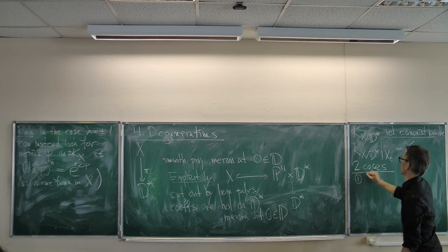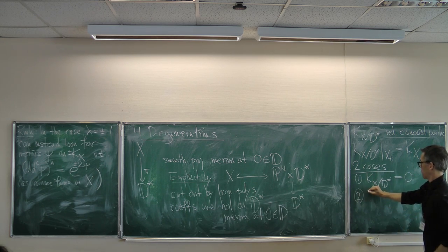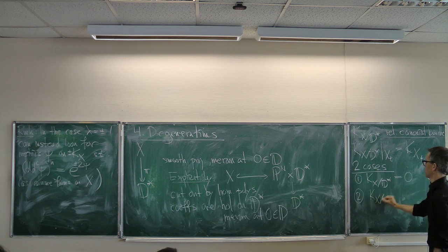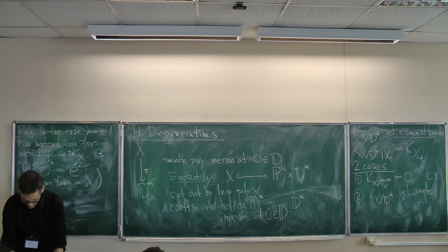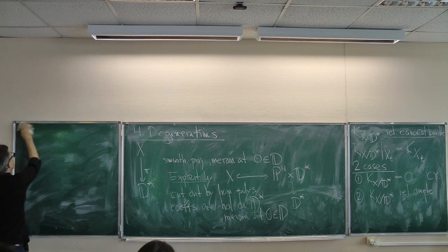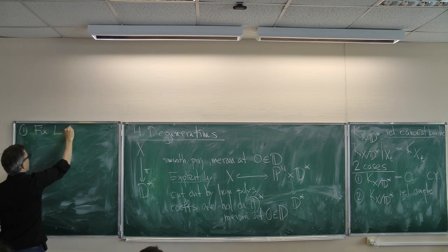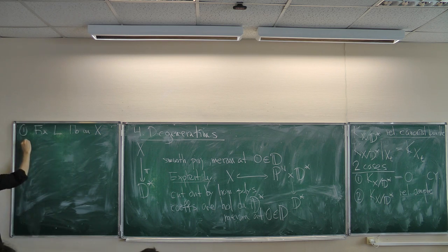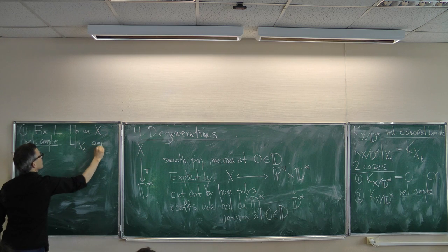I want to look at two cases. The first is when the relative canonical bundle K_{X/D*} is trivial — this is the Calabi-Yau case. The second case is when K_{X/D*} is relatively ample. In the first case, I also fix L, a line bundle on X which is relatively ample, meaning L restricted to the fiber X_t is ample.